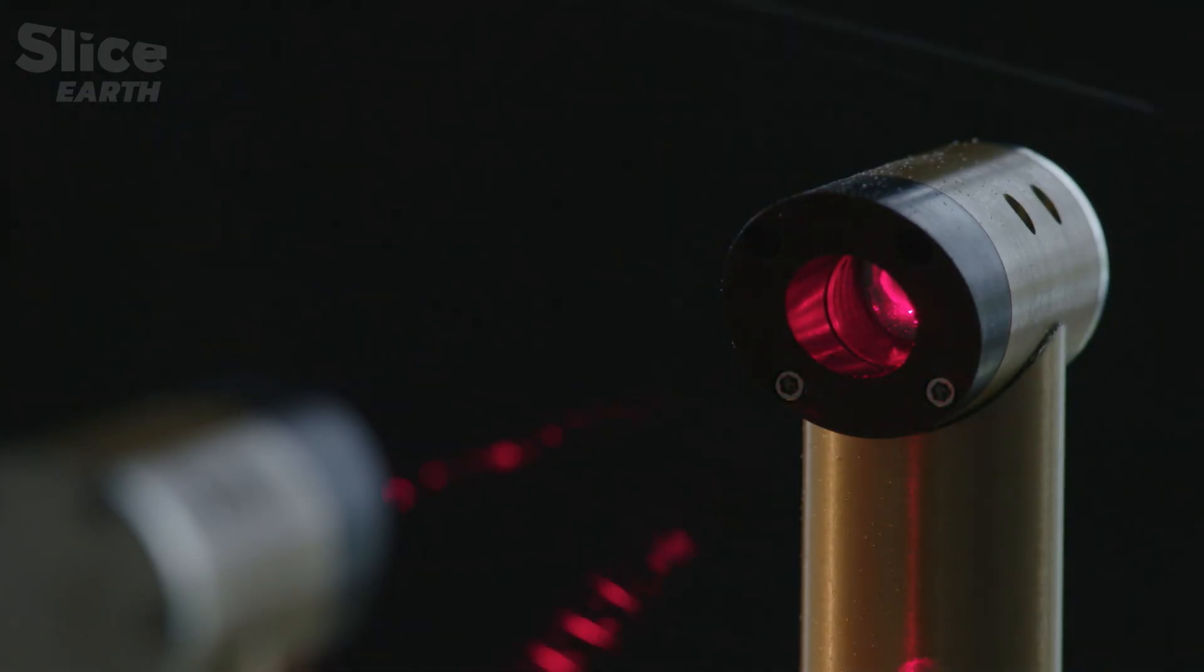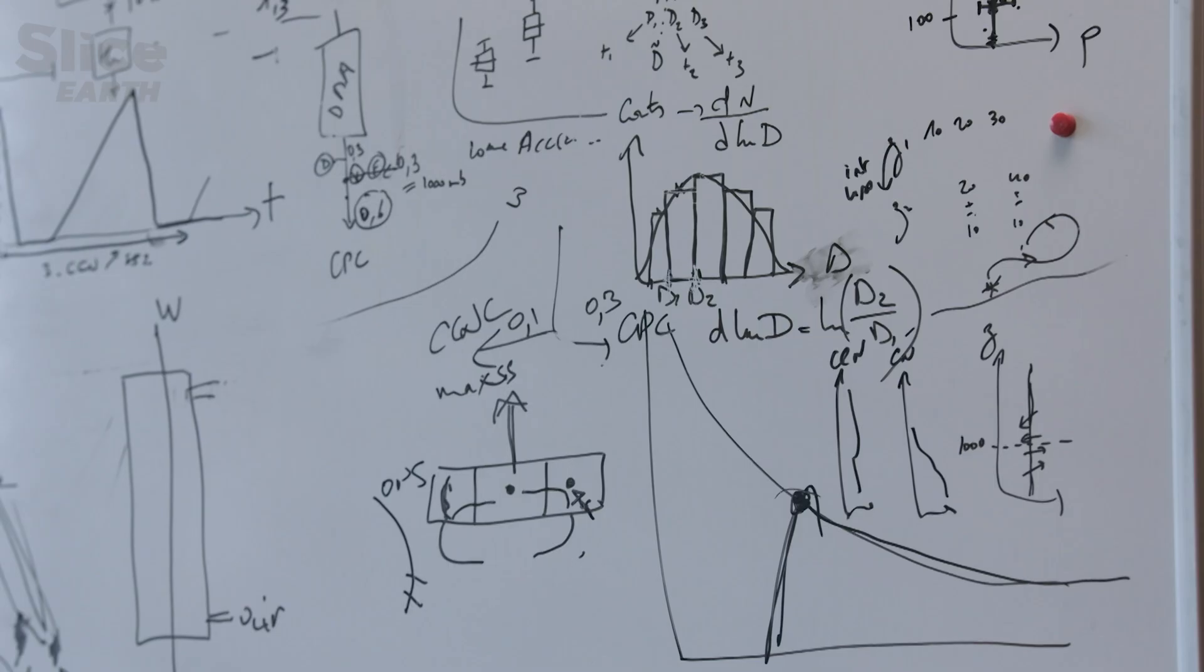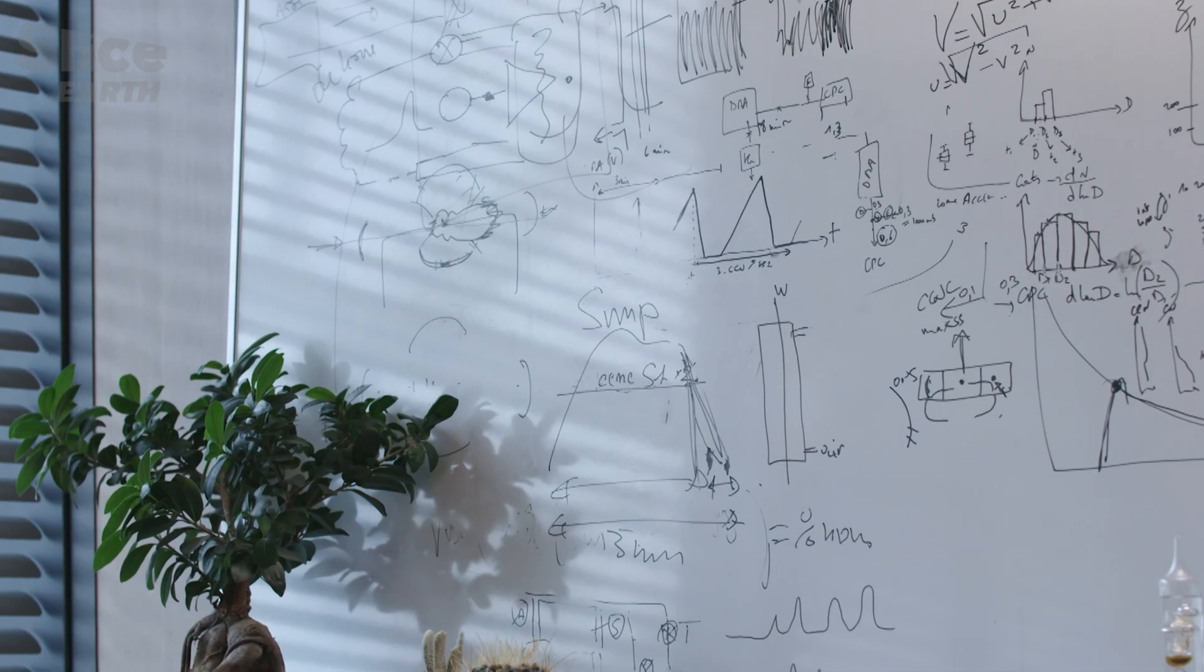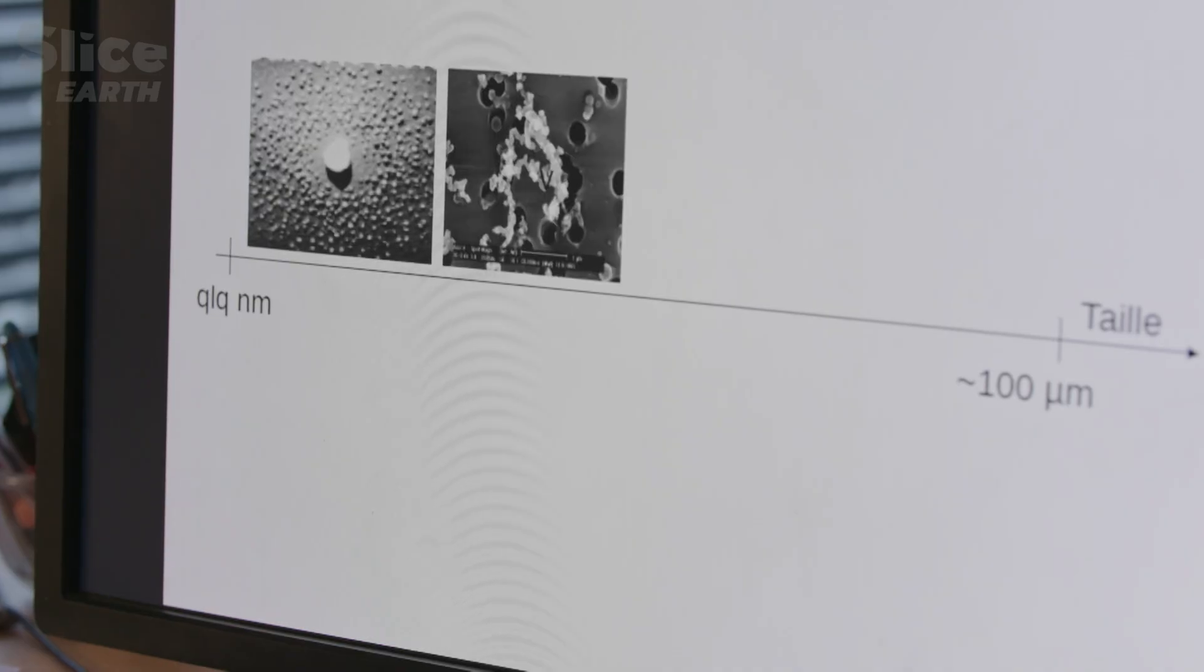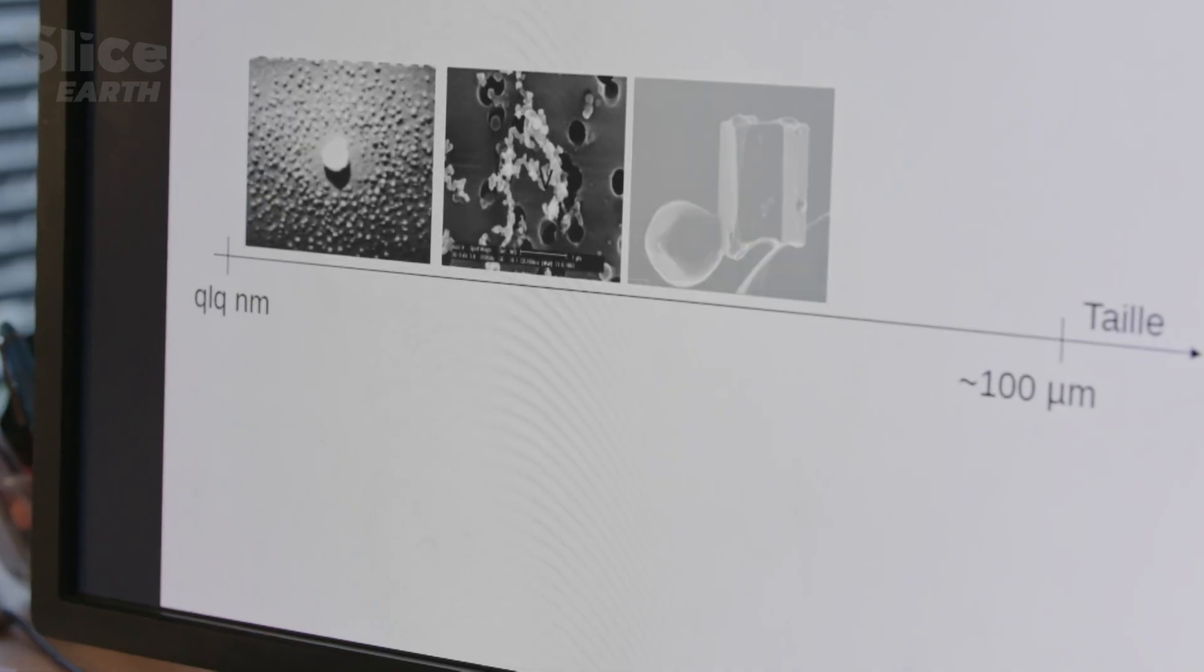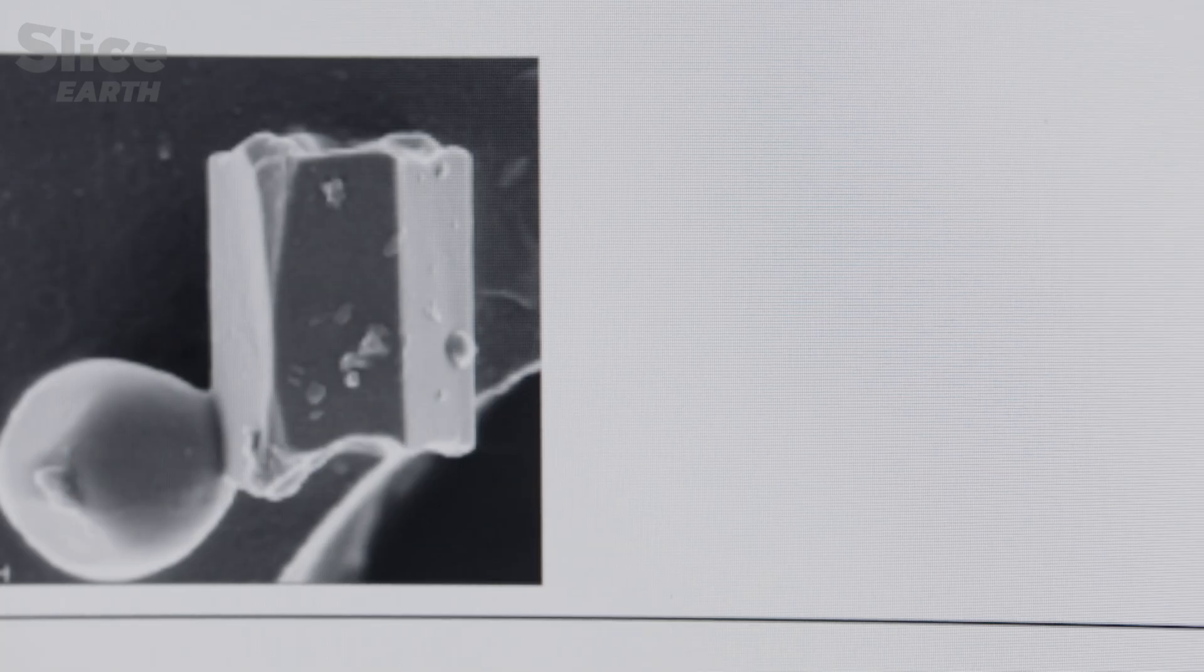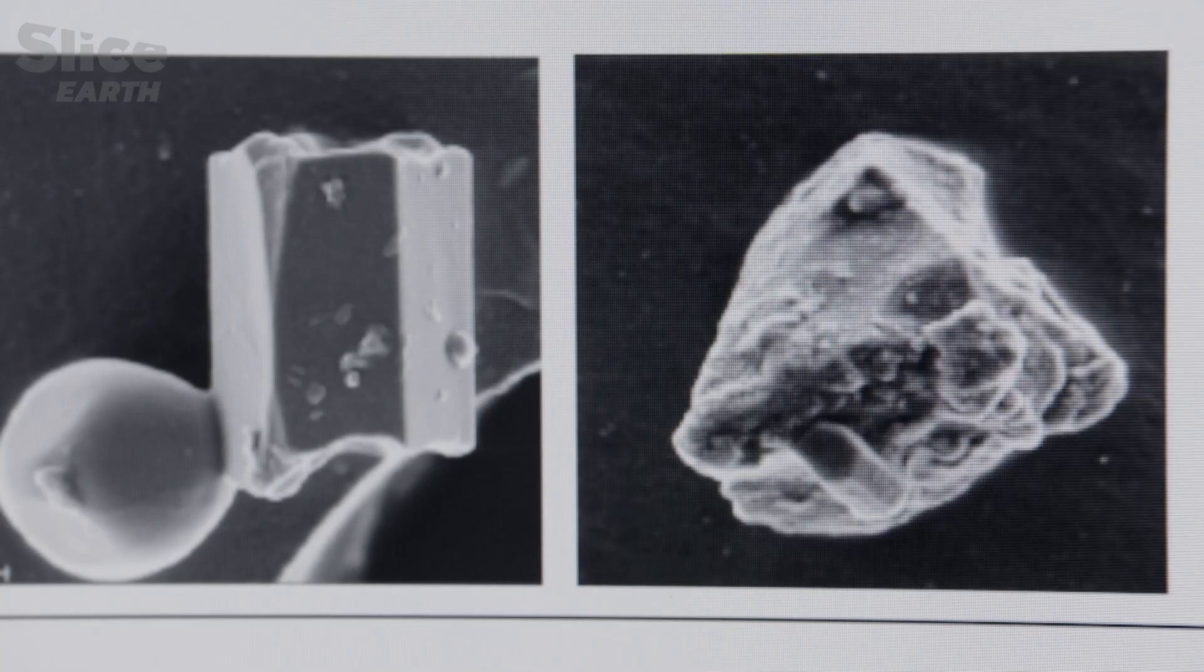Cériel Donjon is particularly interested in very small particles in suspension in the air, without which there would be no clouds over the Earth: aerosols. These particles, which range from just a few microns to a few millimetres across, allow water vapour to transform into droplets.